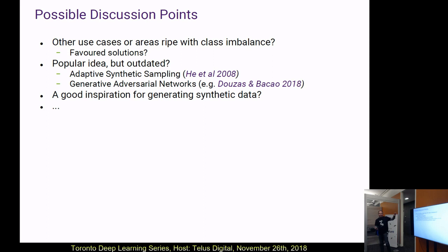This is linked to the second discussion point as well, because this is an older algorithm from 2002 and there have been advances. One very popular advancement on this exact technique is called Adaptive Synthetic Sampling, ADASYN, which does essentially the same thing but uses the concept of a density profile to apply weights to how the distance is computed. There are even more exotic approaches like generative adversarial networks, or people training neural networks and GANs to create synthetic data.